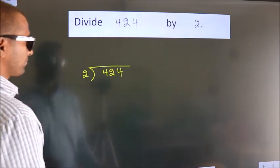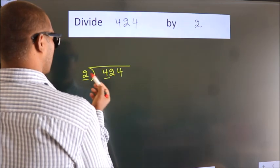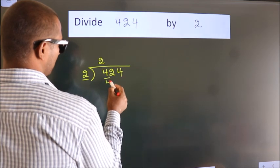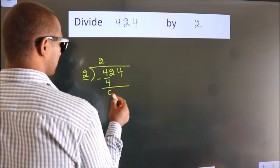Next, here we have 4, here 2. When do we get 4 in 2 table? 2 2s, 4. Now we should subtract. We get 0.